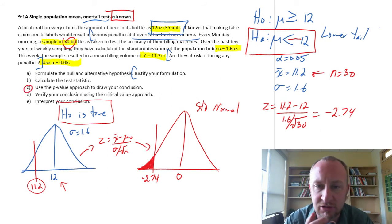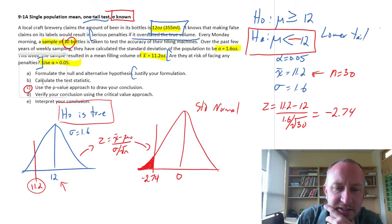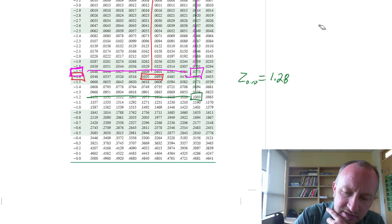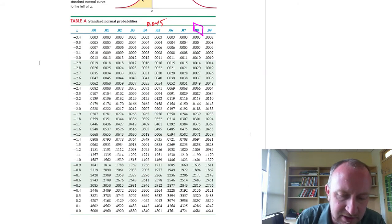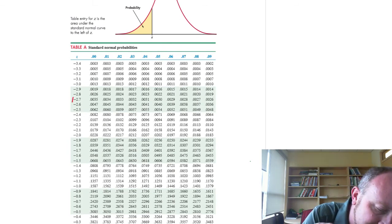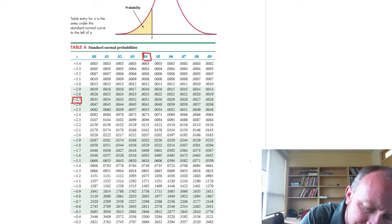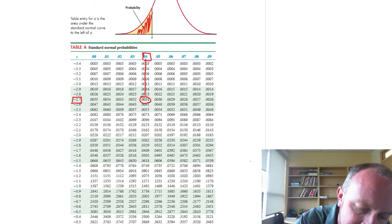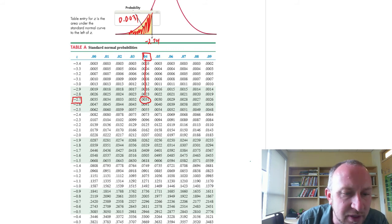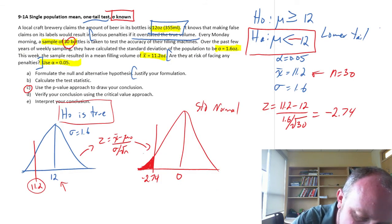If I look for negative 2.74 in these tables, where those two meet, I have that probability 0.0031. These tables are giving us lower tail probabilities. So if this is negative 2.74, then this probability is 0.0031. This area here in this tail, 0.0031, and in this case that is my p-value.